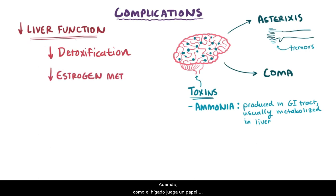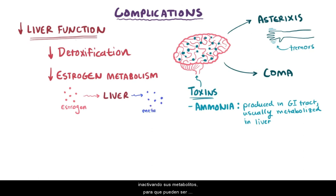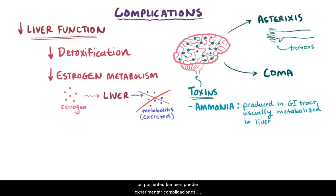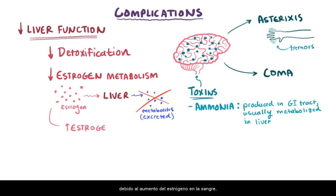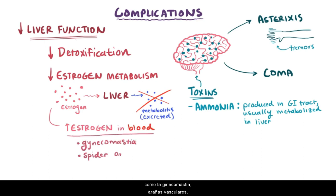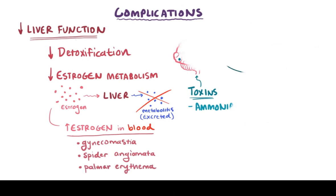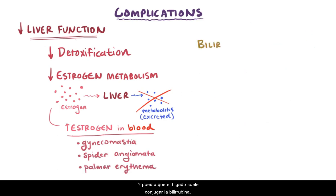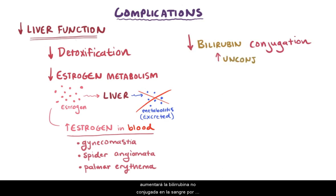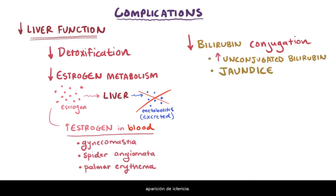Since the liver plays a big role in metabolizing estrogen into inactive metabolites that can be removed and excreted, patients can also experience complications due to increased estrogen in the blood — like gynecomastia, spider angiomata, and palmar erythema. And since the liver usually conjugates bilirubin, there will be increased unconjugated bilirubin in the blood from a less functional liver, which can lead to jaundice.